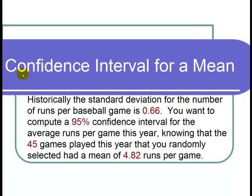This is a video on a confidence interval for a mean. The question states, historically the standard deviation for the number of runs per baseball game is 0.66.